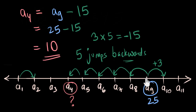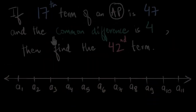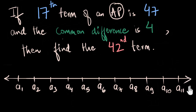Now you're probably thinking: this number line thing works for a few steps, but what if there are a lot of jumps — what if you can't easily draw these numbers? What would you do then? Let's take an example. If the 17th term of an AP is 47 and the common difference is 4, find the 42nd term. We're really stuck — how do we visualize this without drawing a very long number line with 40 terms? Pause the video and think: where do we start, where do we want to go, and where are the jumps?